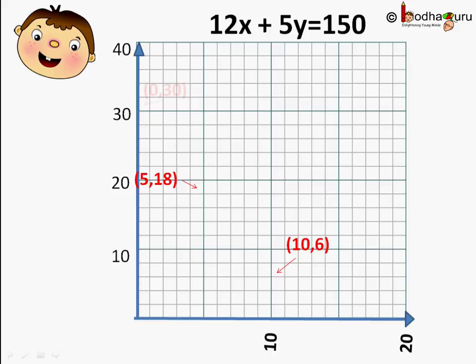When X equal to 0 that means I take no apple, Y equal to 30, that is we get 30 guavas. If we join these points we get a straight line. So a graph of a linear equation of two variables would be a straight line.